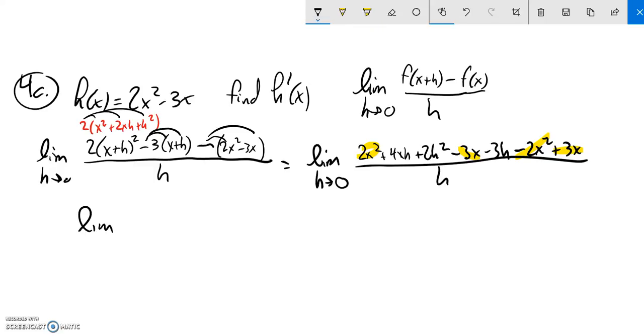So then if I look at what I'm left with, I can factor an h out of each of these pieces. So that'd be h times 4x plus 2h minus 3. And conveniently, h's divide out, which is exactly what I wanted to happen.